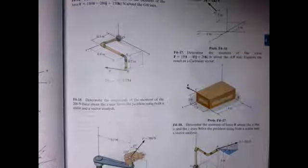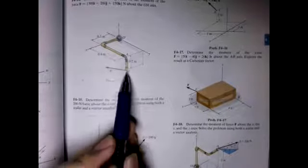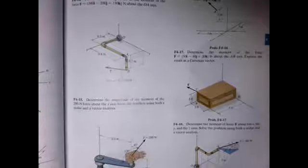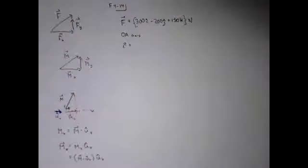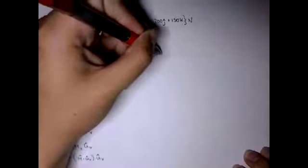The position vector will have to coincide with point B. It's a very easy mistake to think the position vector goes from O to A. But keep in mind that this position vector always has to point towards the force. The position vector always points toward the force.